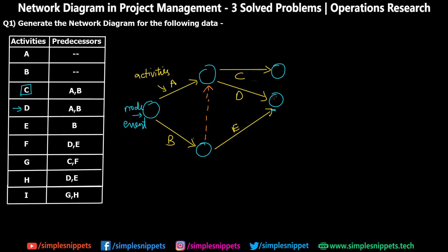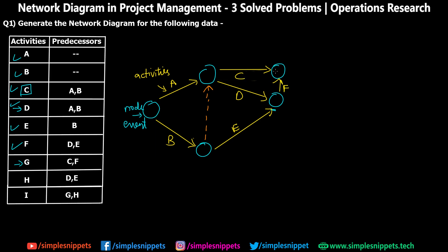Now that D and E are combined at this node, we start F from here, resulting in a different node. Moving to G: G requires C and F together. C reached one node, F reached another. Instead of having them separate, I'll connect F directly to the node where C ended and name it F. Now C and F result in the same node, so G can easily start. So G is drawn, leading to a new node.